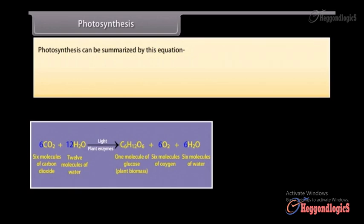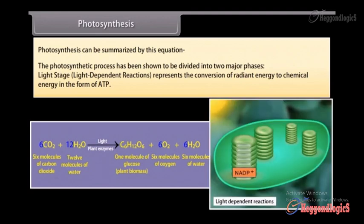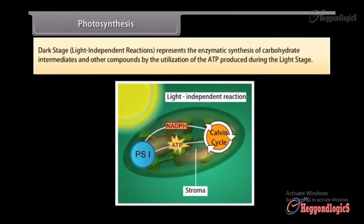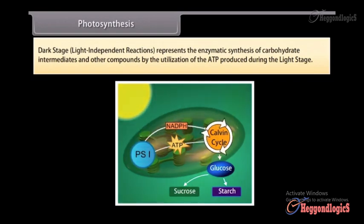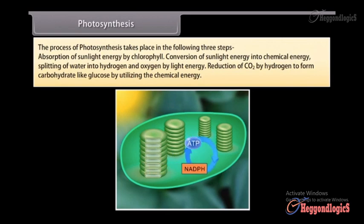Photosynthesis can be summarized by this equation. The photosynthetic process has been shown to be divided into two major phases: light stage, light-dependent reactions, represents conversion of radiant energy to chemical energy in the form of ATP; dark stage, light-independent reactions, represents the enzymatic synthesis of carbohydrate intermediates and other compounds by the utilization of the ATP produced during the light stage. The process of photosynthesis takes place in the following three steps: absorption of sunlight energy by chlorophyll, conversion of sunlight energy into chemical energy, splitting of water into hydrogen and oxygen by light energy, reduction of CO2 by hydrogen to form carbohydrates like glucose by utilizing the chemical energy.